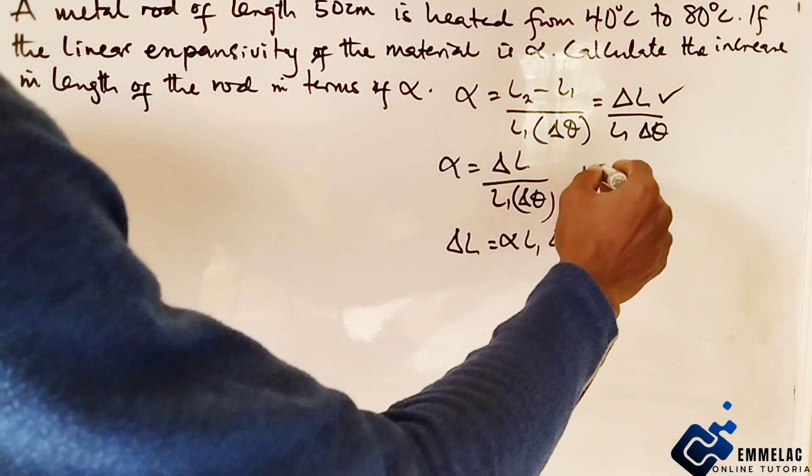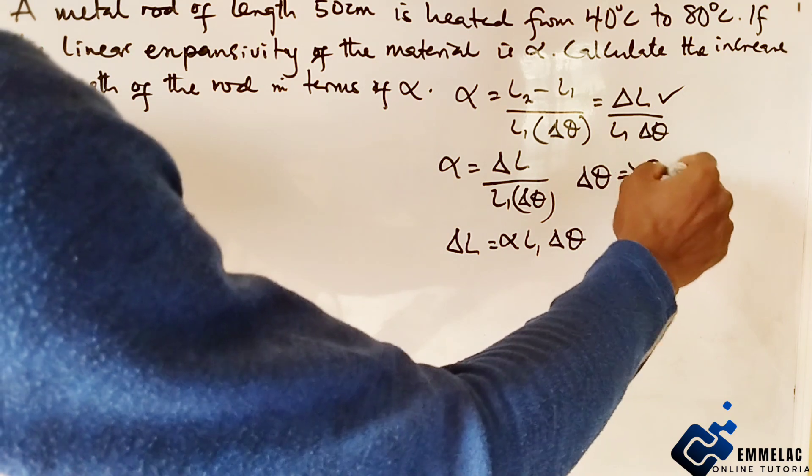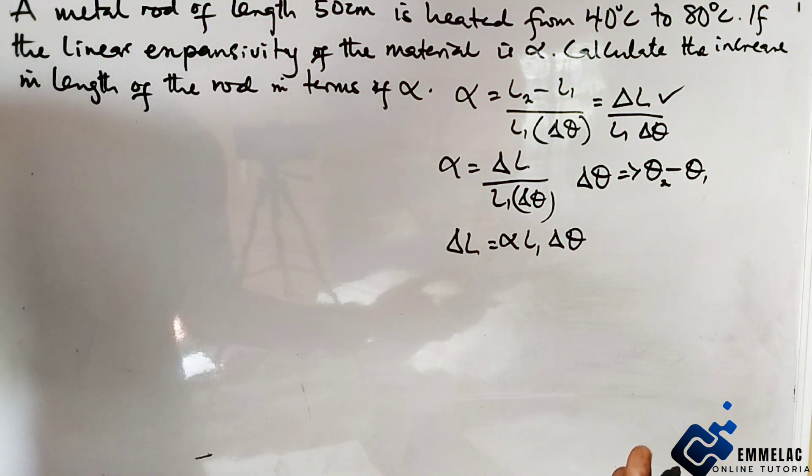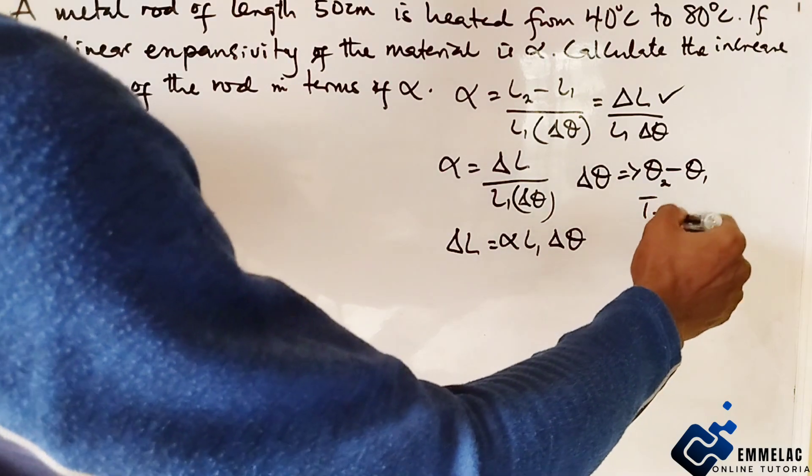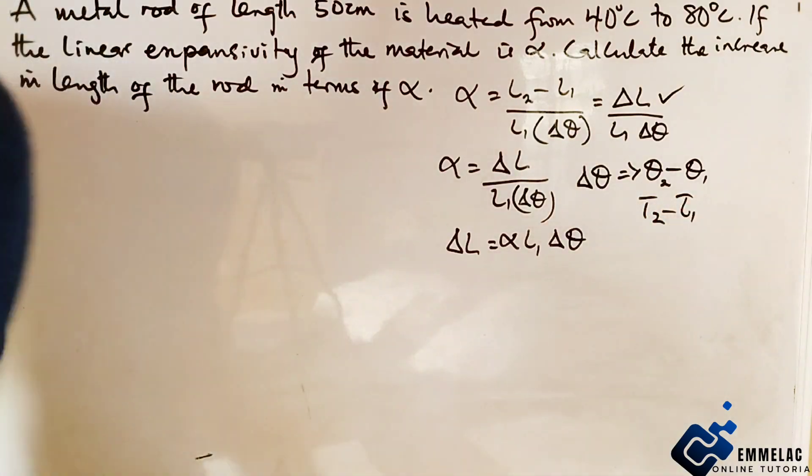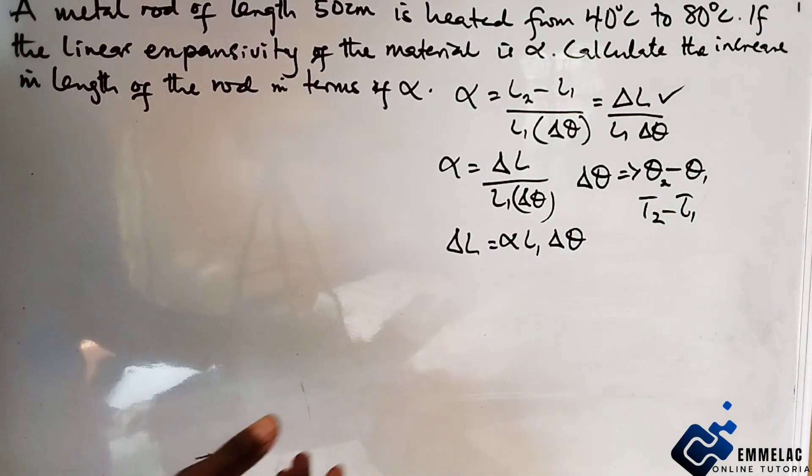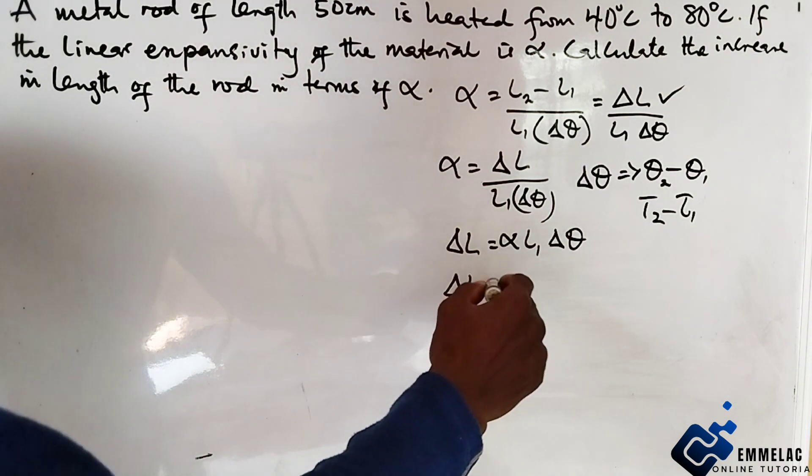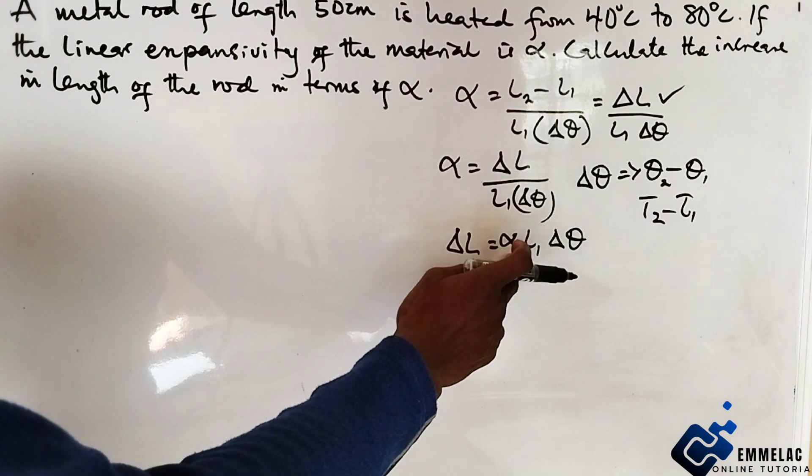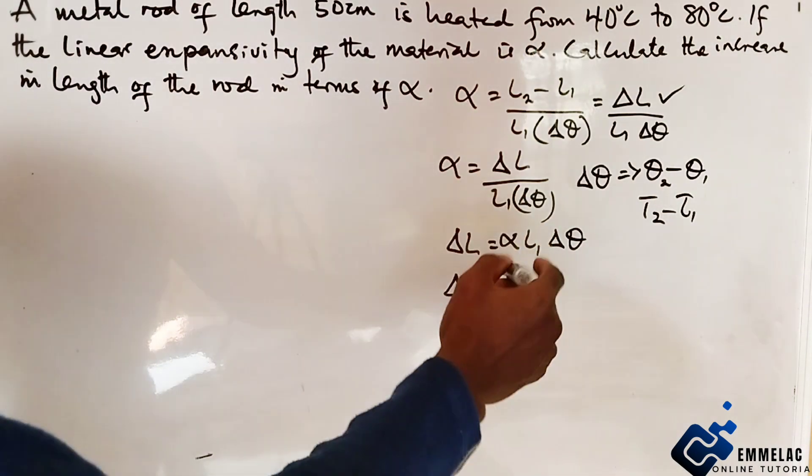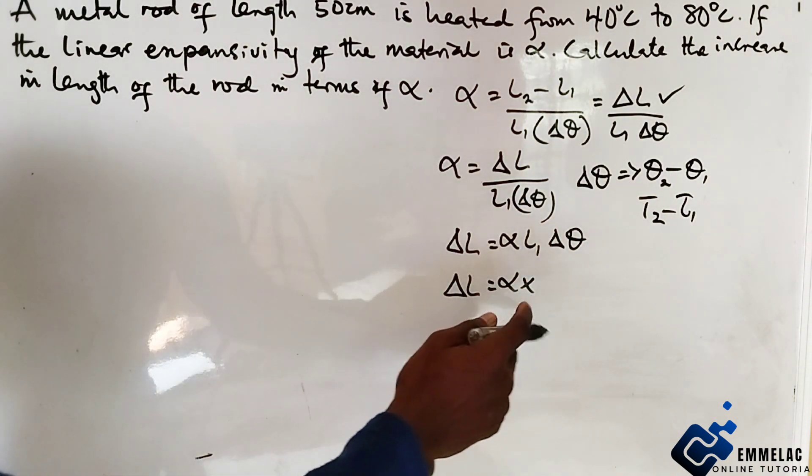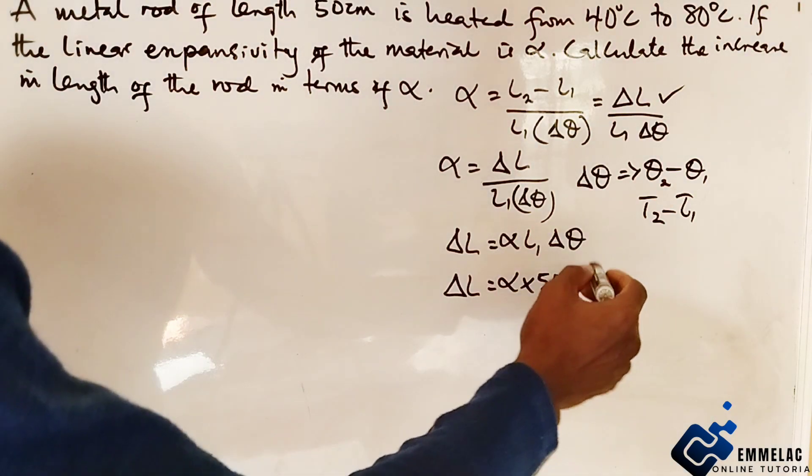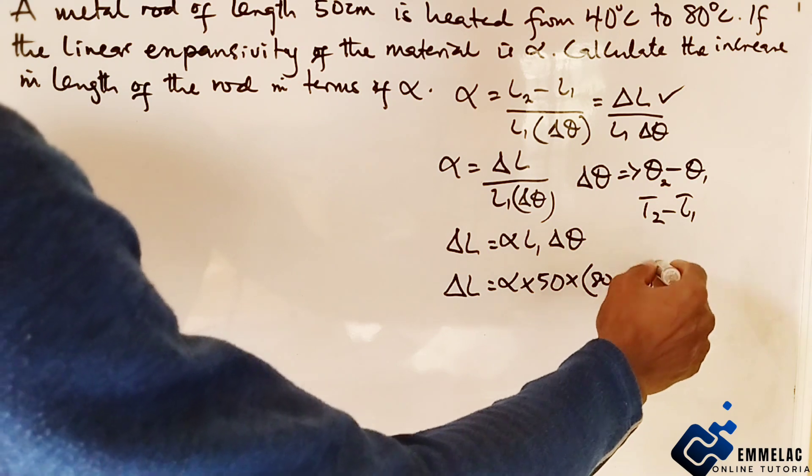Take note that the change in temperature is theta 2 minus theta 1, or T2 minus T1. The increase in length equals alpha times the length, which is 50, times the change in temperature, 80 minus 40.